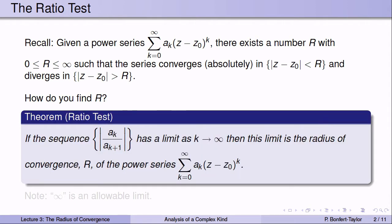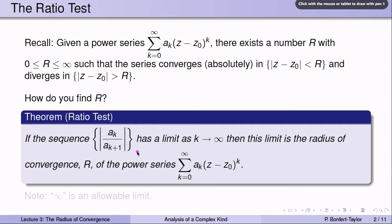Here's a first idea on how to find such an R. If the sequence of quotients a_k divided by a_{k+1} has a limit, then this limit is the radius of convergence of the power series. This theorem, called the ratio test, does not say that the sequence of quotients of successive coefficients necessarily has a limit — it just says if that sequence has a limit, then that limit is the radius of convergence.